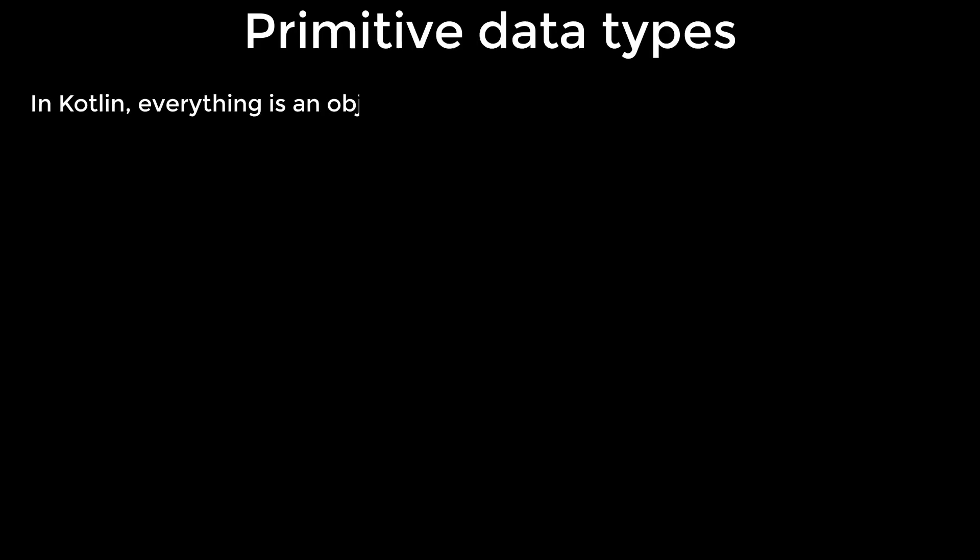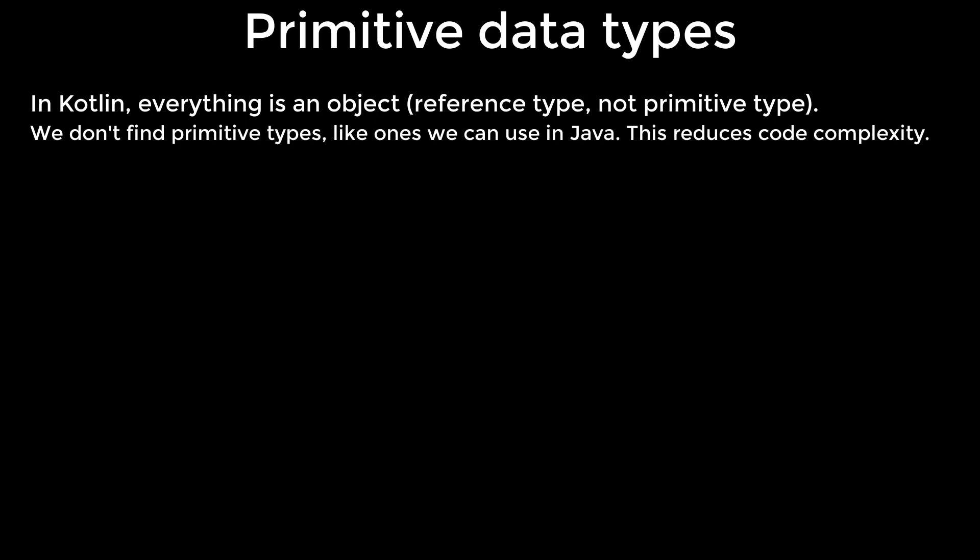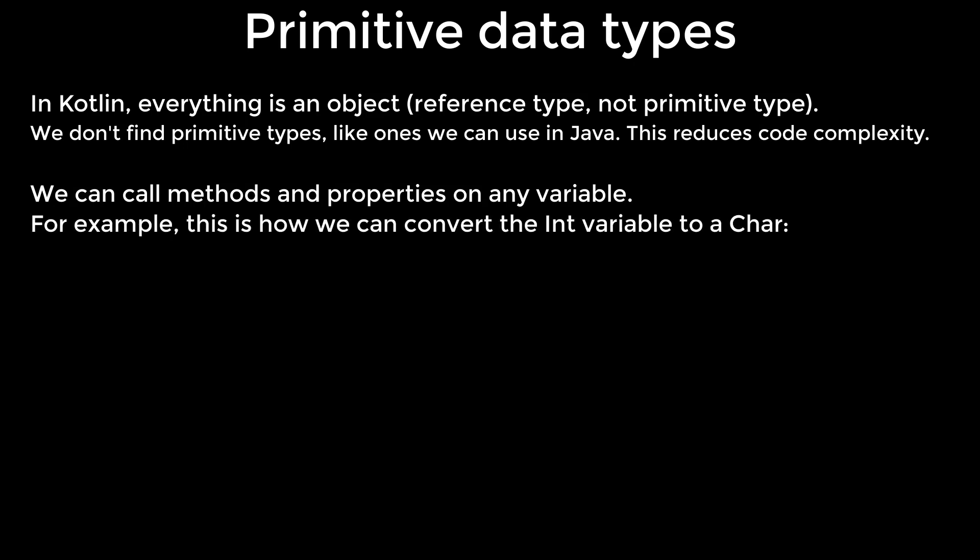Primitive data types in Kotlin: everything is an object. We don't find primitive types like ones we can use in Java. This reduces code complexity. We can call methods and properties on any variable.